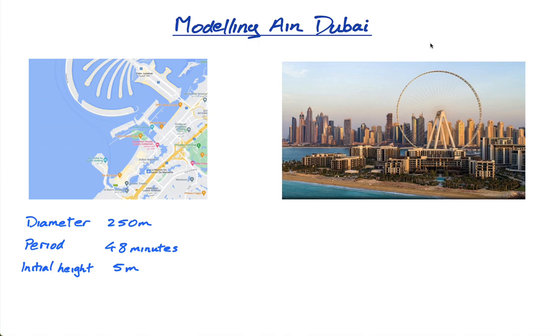Essentially, the student modeled the height of one of the pods of this Ferris wheel over time and found out at which times she would be able to see over these buildings. That's why I've included a photo here, because after certain amounts of time it's over the buildings and she's able to see the sunset.